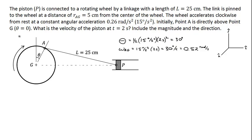We have to be careful with signs here because the wheel is rotating in the clockwise direction. If we define a right-hand axis, a positive rotation will be in the negative direction. So we'll have to account for the fact that omega AG, which we're calling positive, is clockwise. When I see these problems, the first thing I do is try to figure out what I know at the outset.